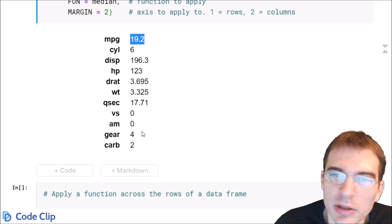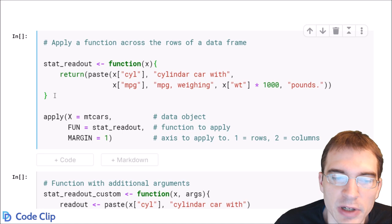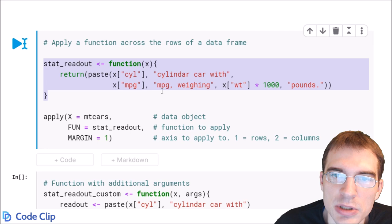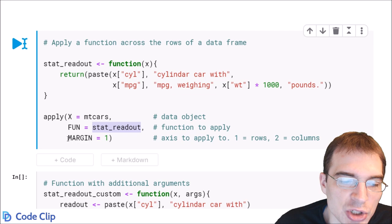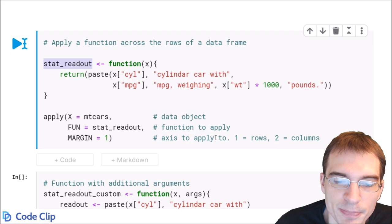And now I'll just give an example of applying a function across rows instead. So here we have a custom function defined this time. It's just going to provide a text readout of some of the different columns in the data frame. And what we're going to do is again apply to the same data set. This time we're going to use our custom stat readout function as the function. And we're going to change the margin to one. So it's going to apply this function across all the rows.